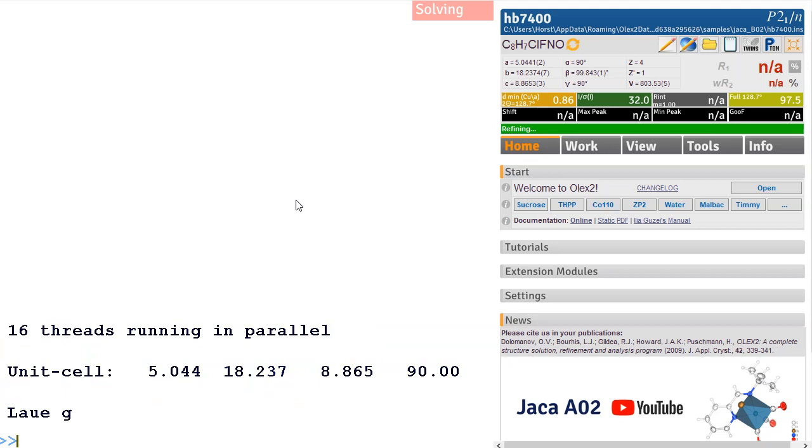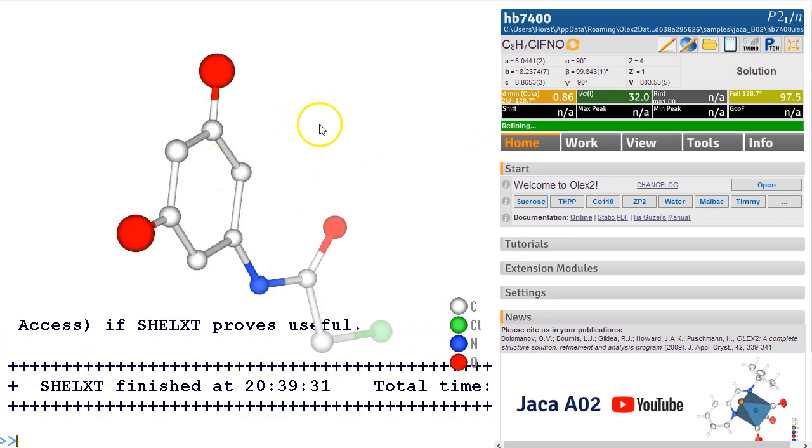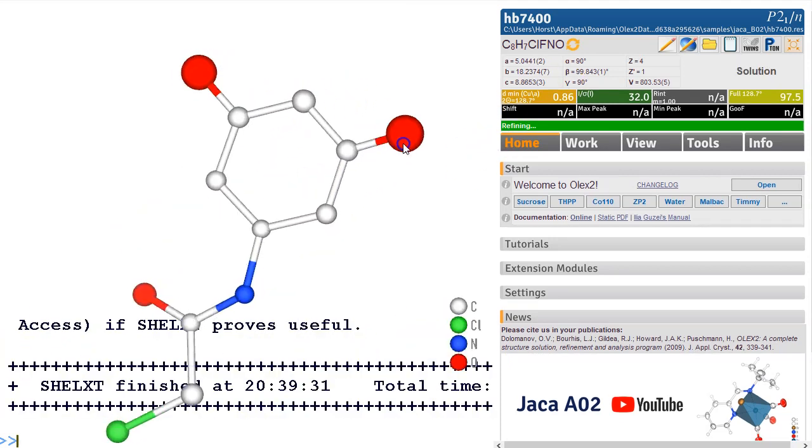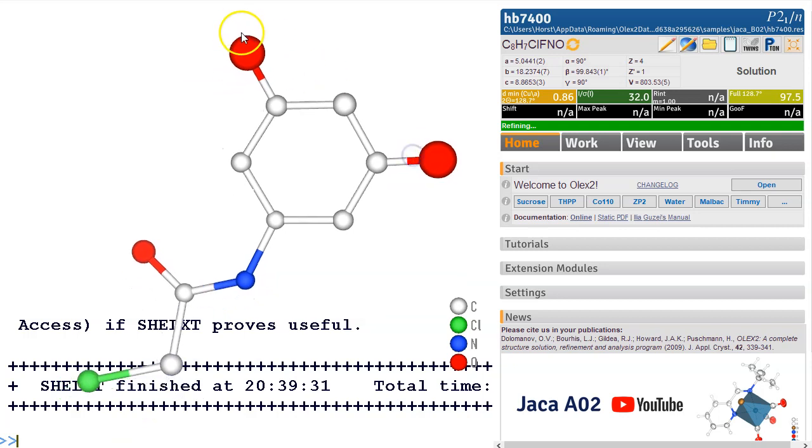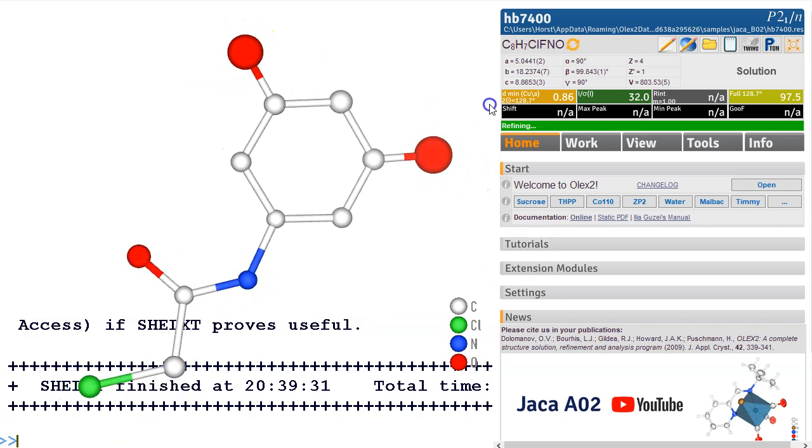Anyway, we can solve and refine and just carry on normally on this one. Right, it looks pretty good, we've got a structure here but these two oxygens are clearly a bit big. So Shelx XT thought they're oxygens and then on refinement they actually blew up a bit.